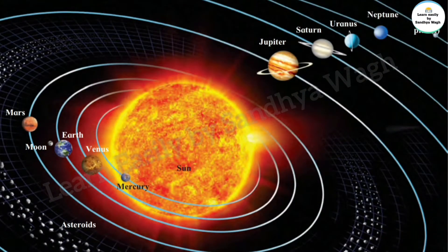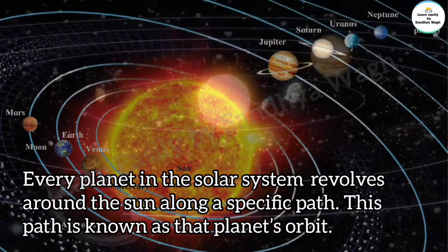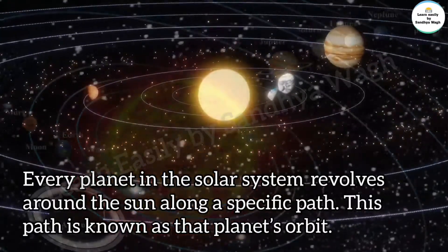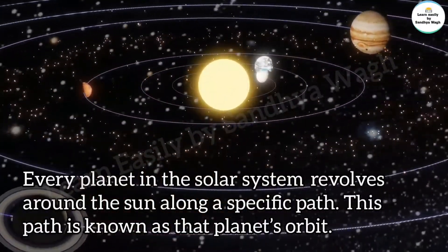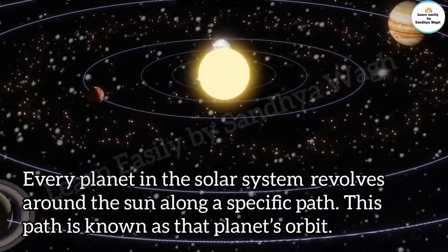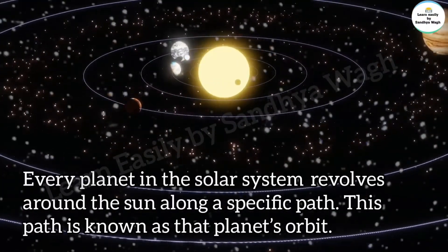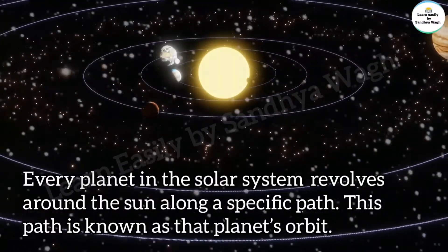The planets in our solar system are Mercury, Venus, Mars, Jupiter, Saturn, Uranus, and Neptune. Every planet in the solar system revolves around the sun along a specific path. This path is known as the planet's orbit.